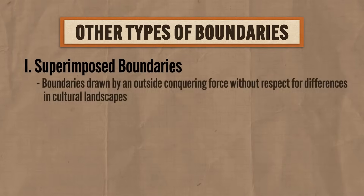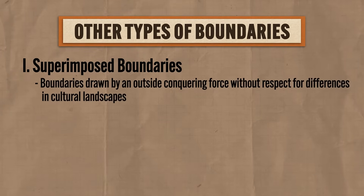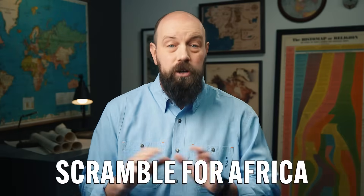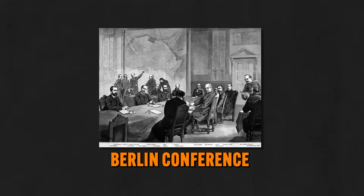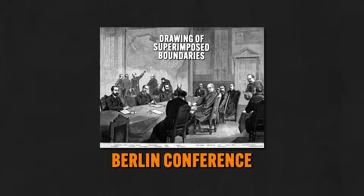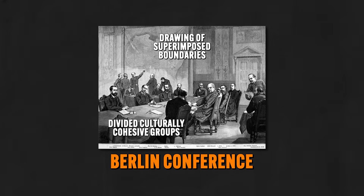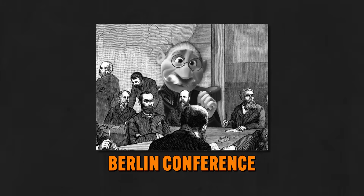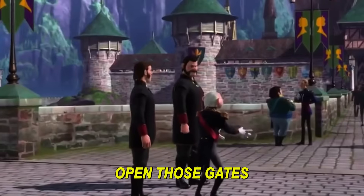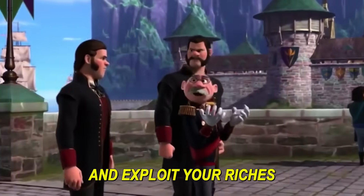The fourth kind of boundary is a superimposed boundary, which is drawn by an outside conquering force without respect to differences in the cultural landscape. Superimposed boundaries are almost always associated with imperialism and colonialism. For example, during the second wave of European imperialism and the scramble for Africa, imperial powers met at the Berlin Conference and carved up Africa for their own benefit. The result was the drawing of superimposed boundaries all across the continent, which in some cases divided culturally cohesive people groups and in other cases jammed rival ethnic groups together.